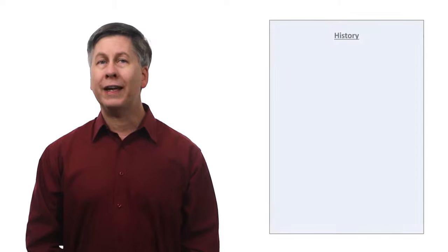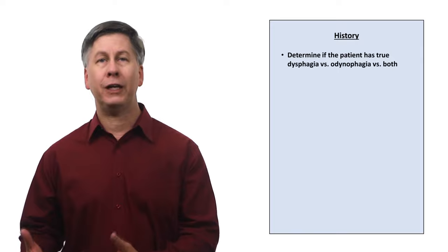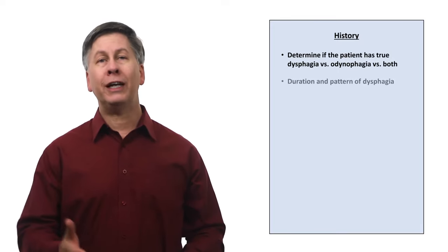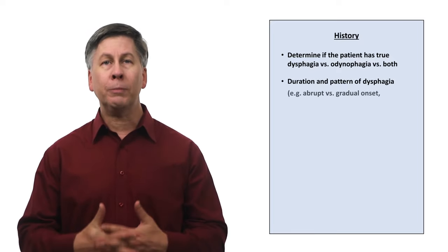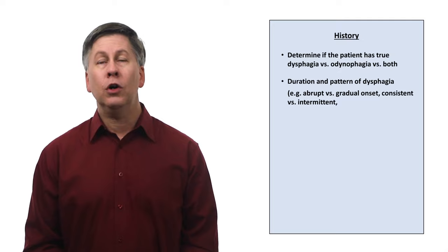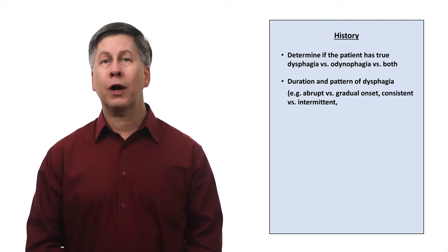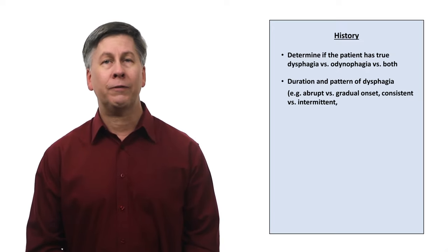How do we evaluate dysphagia? Starting with the history, the first task is to determine whether the patient is experiencing true dysphagia versus odynophagia versus both. Ask about the duration and pattern of dysphagia. Dysphagia that had a very abrupt onset is consistent with a stroke or food impaction. Is the dysphagia consistently present at every meal or only sometimes? Intermittent dysphagia is more often described with diffuse esophageal spasm, webs and rings, and eosinophilic esophagitis.